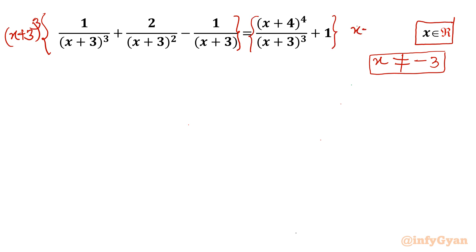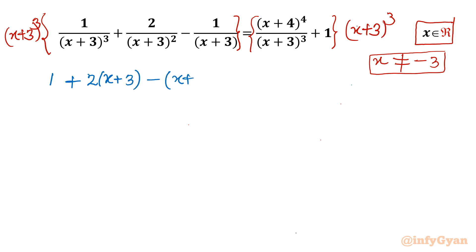Multiplying both sides by (x+3)³, the denominators cancel. On the left-hand side we get 1 plus 2(x+3) minus (x+3)². On the right-hand side we get (x+4)⁴ plus (x+3)³.